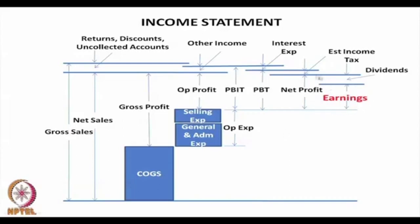The net profit belongs to the owners of the company, but the amount they forfeit back to the company makes them the real owners of those earnings. Therefore, paid-in capital by shareholders plus retained earnings, which they forfeit for reinvestment in the company, is actually the total amount called the owners' equity.